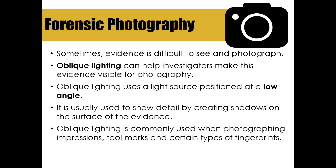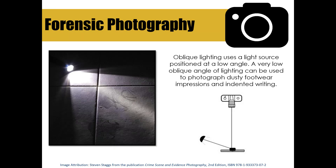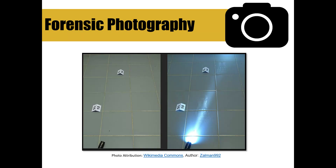Here you can see a flashlight positioned at a low angle at a crime scene with the lights turned off. It casts a shadow on a footprint, making it visible — when captured with digital photography, you can clearly see the tread pattern. In another example, the image on the left shows dusty footprints at a crime scene that are invisible in normal light. But when the lights are turned off and a low-angle beam is applied, those footprints appear and are captured through digital photography, revealing the tread pattern clearly.